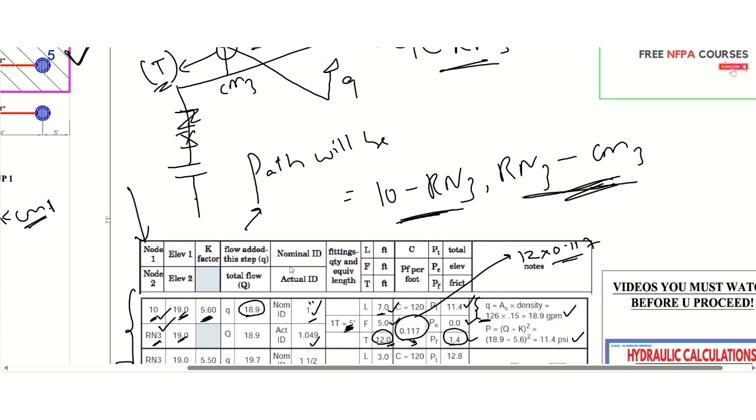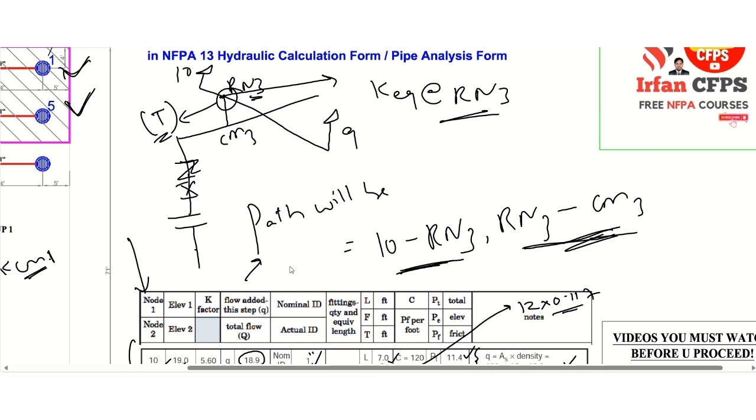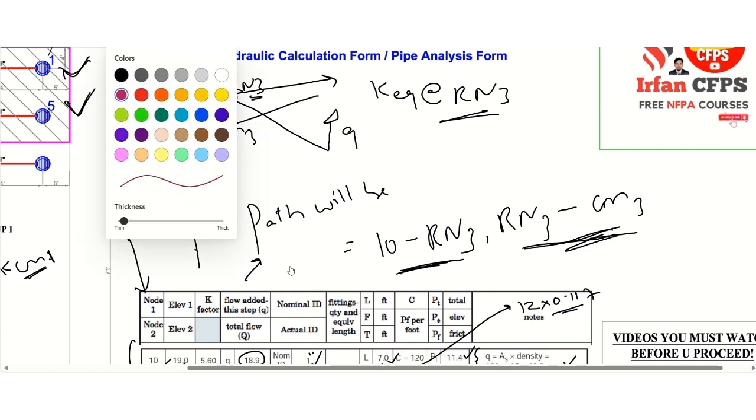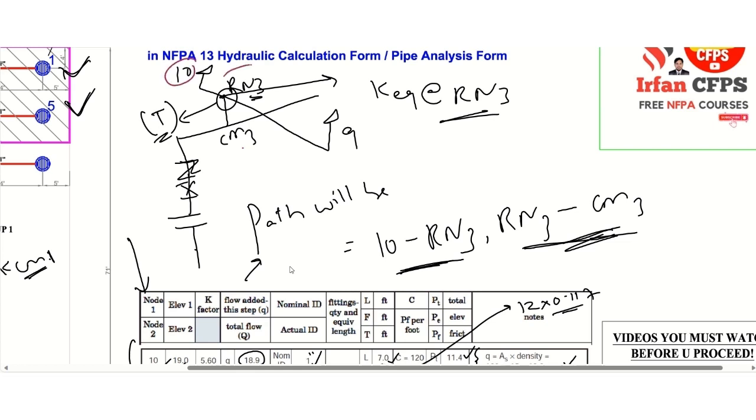So now what we need to do, since we are considering the most challenging path from 10 to RN3, we are going to come back to the primary path from this isometric. If you check here, here 10, RN3 and CM3, this is the primary path. So now we calculated or we have come from 10 to RN3. Now we need to go to CM3. So RN3 to CM3 also we need to calculate. But since here we don't have any sprinkler, so how will we be able to know the K factor? This one we already calculated in our last step when we did 9 to RN3 calculation. So now you understand why we are calculating the equivalent K factor.